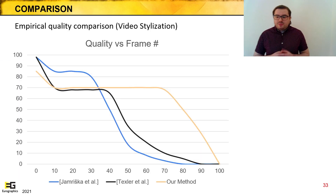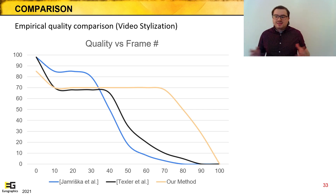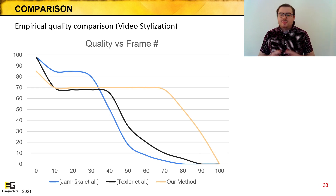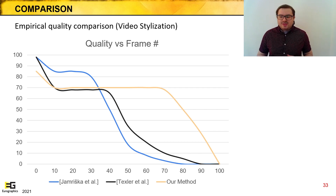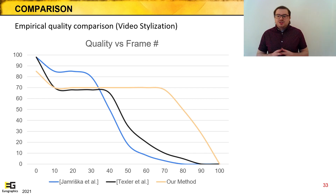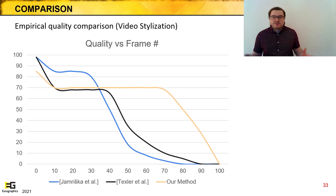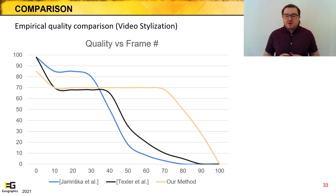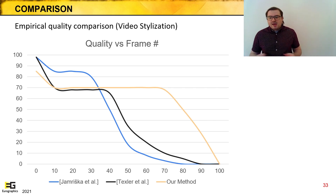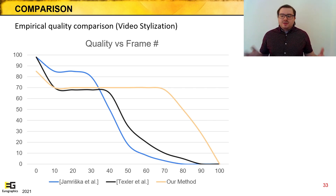To sum up, compared to Yamrishka and Texler, our method is generally able to resist falling apart longer as the sequence moves away from the keyframe. This is shown in a graph of an empirical typical case of video stylization. While Yamrishka produces top-notch quality, the synthesis fails relatively quickly. While Texler can resist a little longer, generally the two methods require a similar number of artist-created keyframes to stylize the entire sequence. In contrast, our method resists even significant changes in the scene and thus requires fewer provided keyframes, reducing the amount of work that needs to be done by an artist.